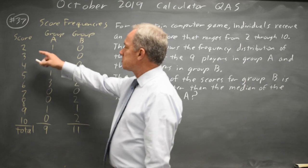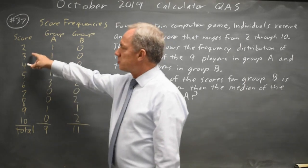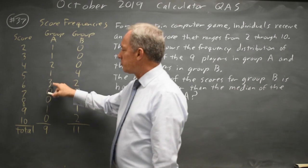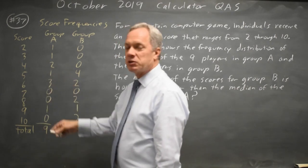The frequency distribution tells us in group A one person scored a two, one scored a three, two people scored a four, one scored a five, three scored a six, and one scored a nine.